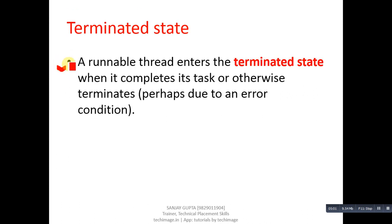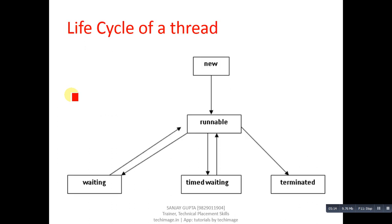The next state is Terminated. A runnable thread enters the Terminated state when it completes its task or otherwise terminates — perhaps due to an error condition.